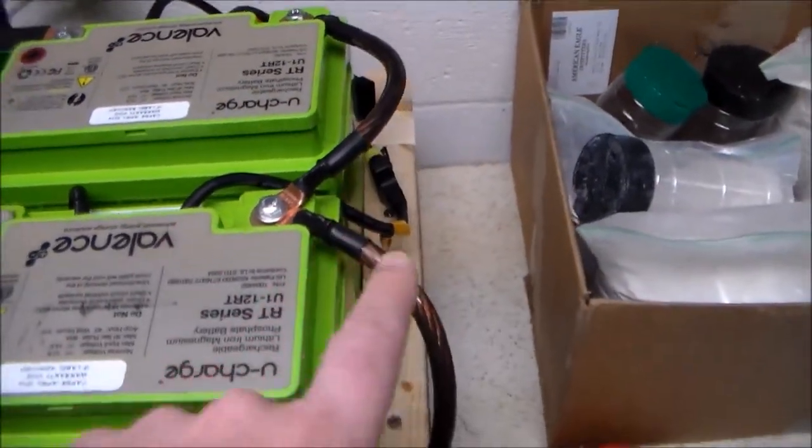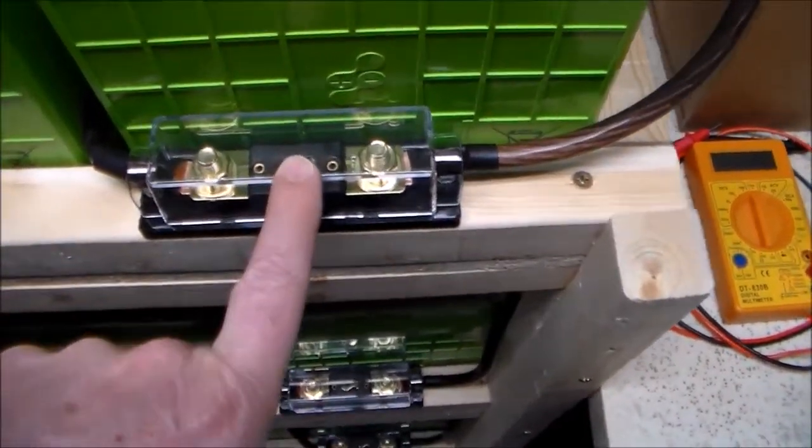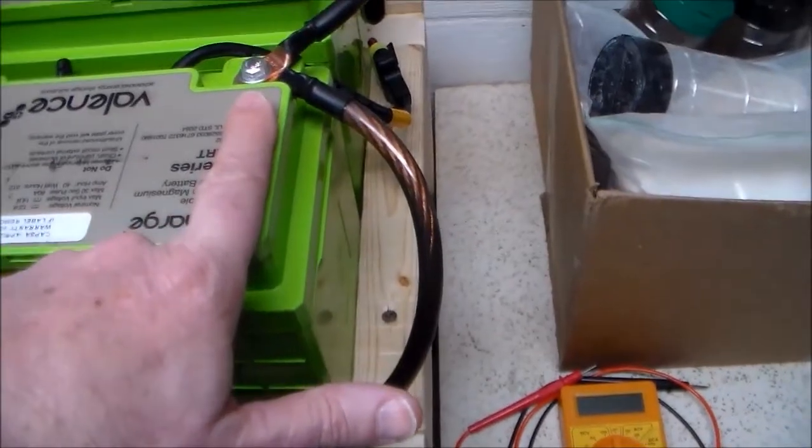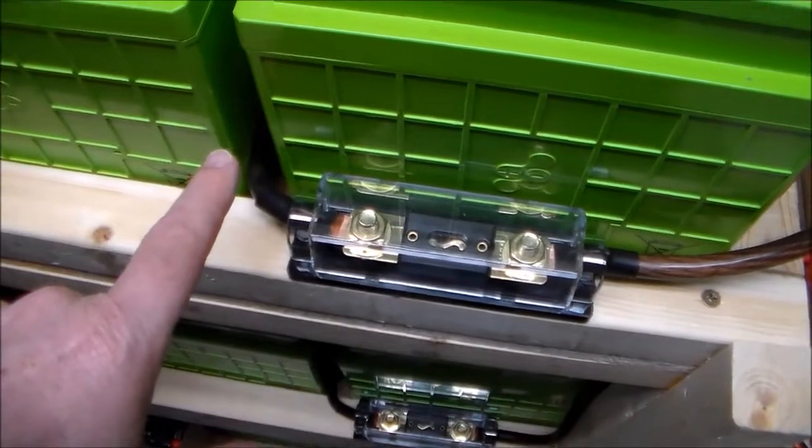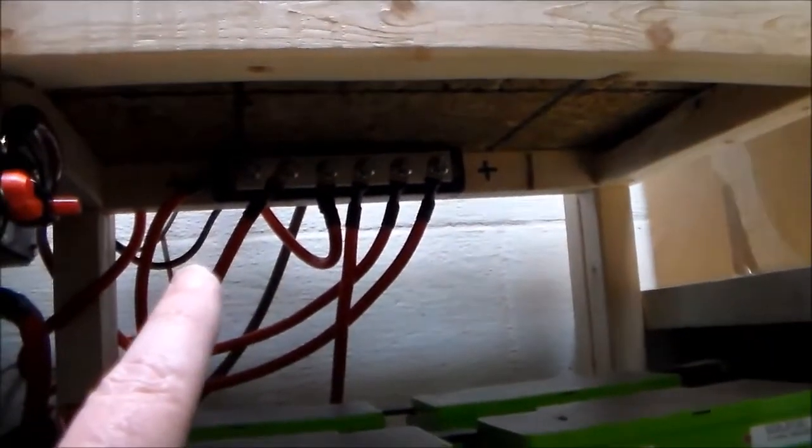On the negative side, I've got an ANL fuse. This is an 80 amp fuse. We're coming off of one corner of this battery set into the fuse, and then that goes from the other side of the fuse down into a bus bar that I've got down under here. I've got the negative on one side and the positive on the other side.